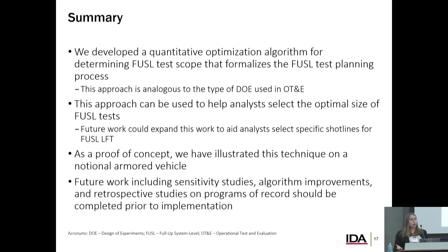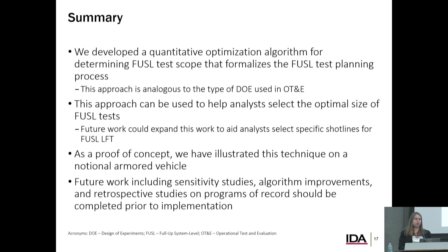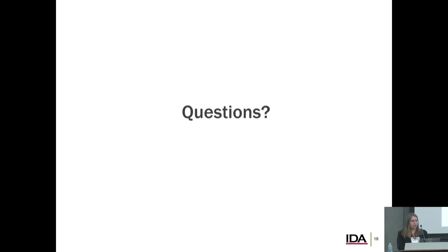In summary, we developed a quantitative optimization algorithm that formalizes the current FUSIL test planning process. It's analogous to the type of DOE we use in operational test and evaluation. We think this approach can help analysts select the optimal size of a FUSIL test. Future work could also help analysts determine the specific locations of those tests — right now they're fairly coarse categories, but a more detailed version could specify specific conditions. We illustrated this using a notional armored vehicle on a small scale to show proof of concept. Future work includes a full-scale retrospective study on an actual program of record with all threats to see how it works at scale, as well as sensitivity studies and algorithm improvements prior to actual implementation. There's a lot of future work, but we do see a lot of potential.